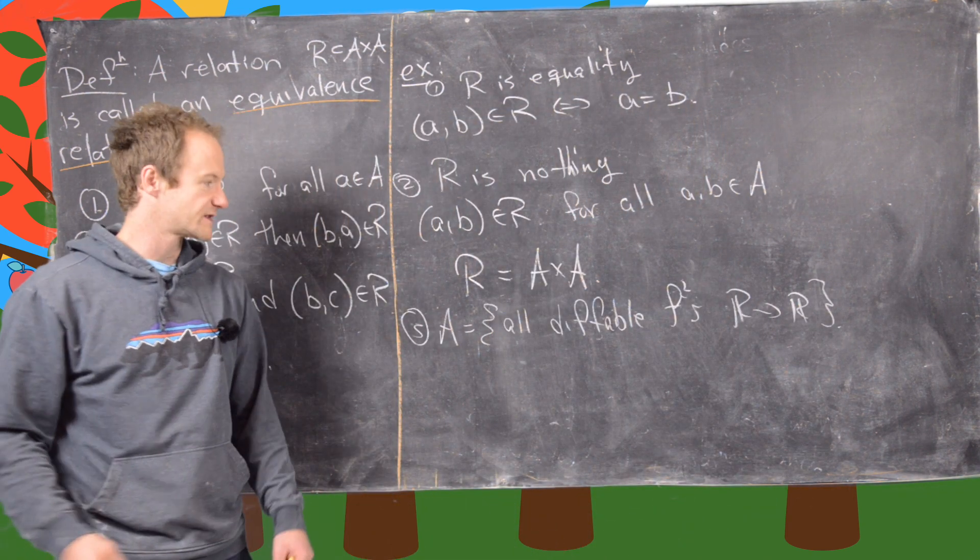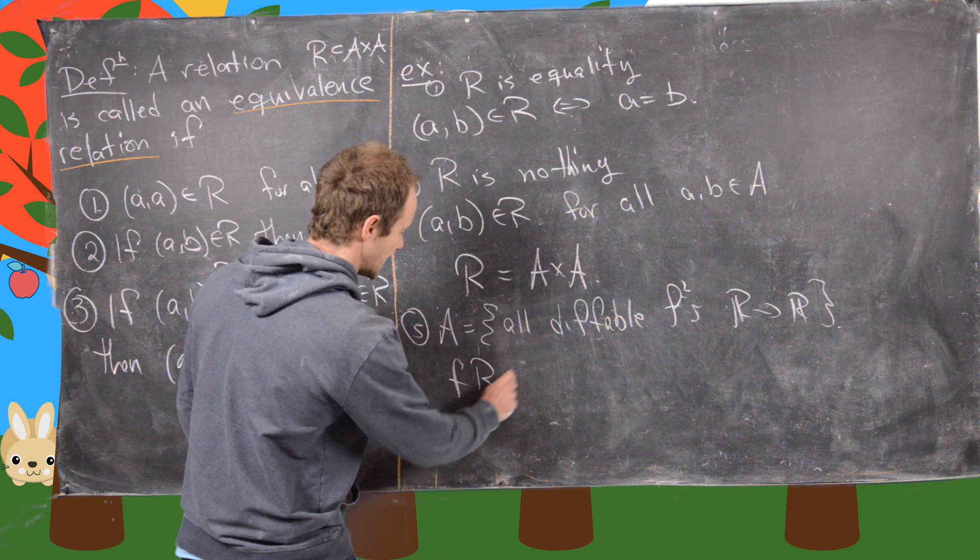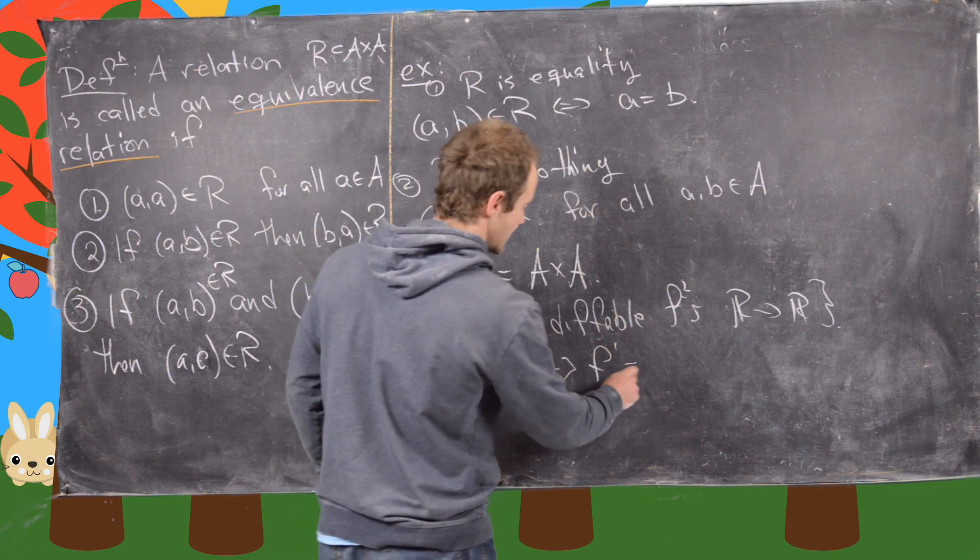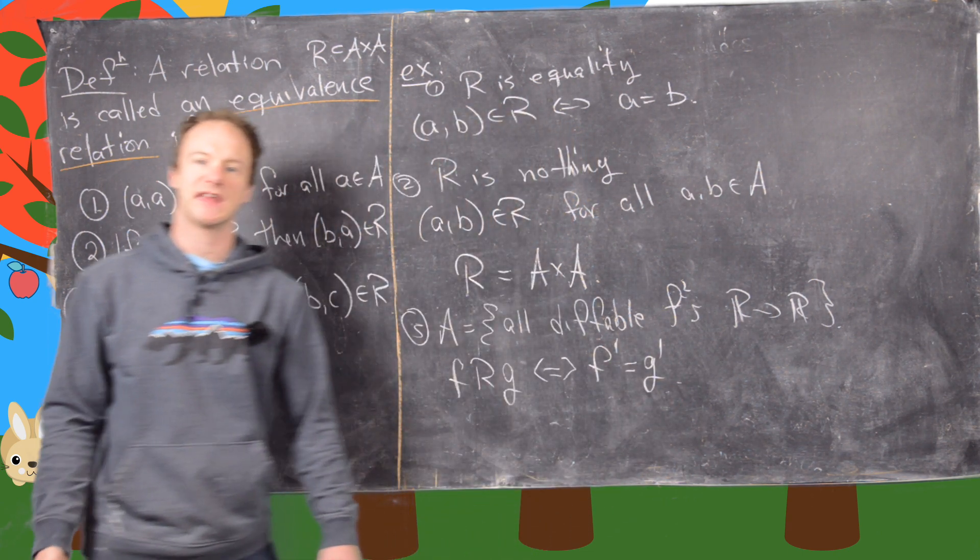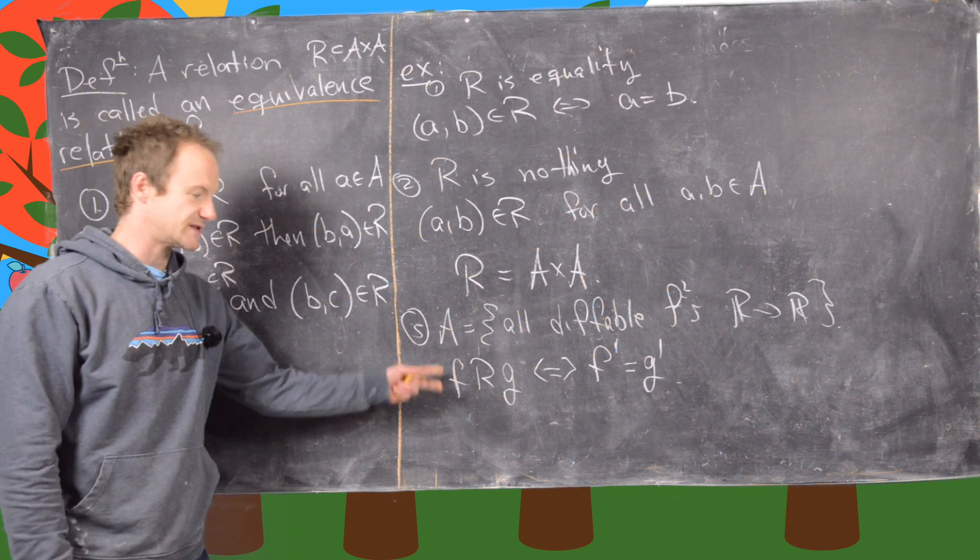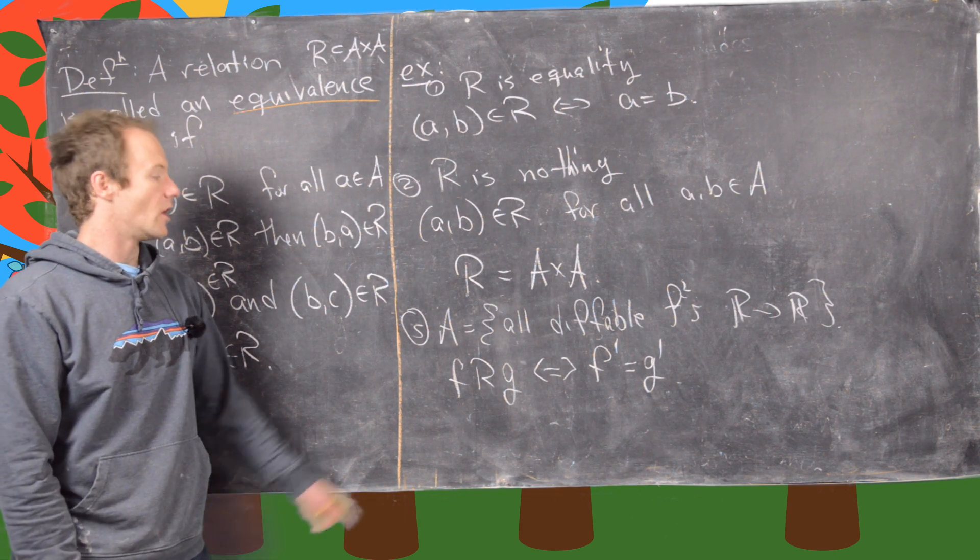And what we'll say is, we'll say that F is related to G if and only if F prime is equal to G prime. So in other words, they have the same derivative. Okay. Good. So it's easy to check that that is an equivalence relation as well. Okay.